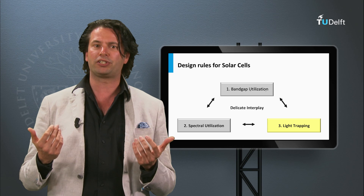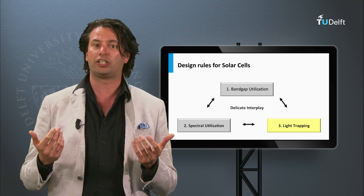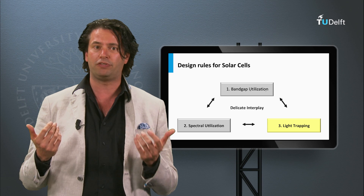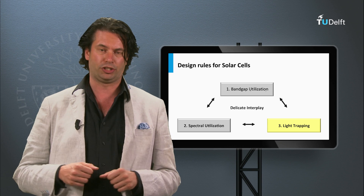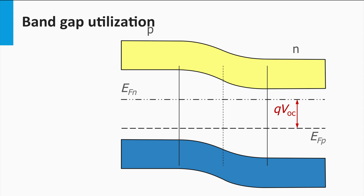This becomes an important issue if you consider thin-film PV technologies. First, we start with the design rule of bandgap utilization.